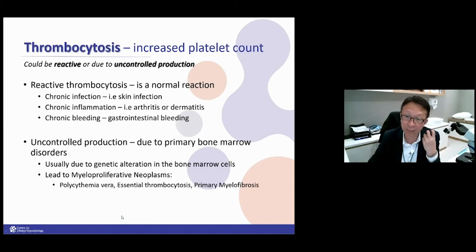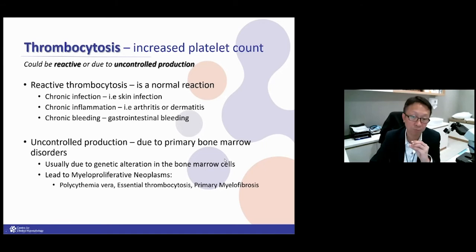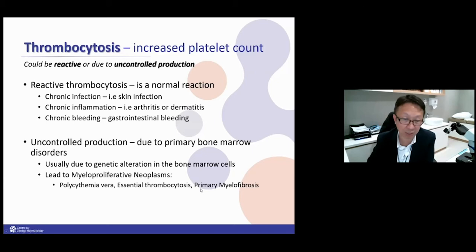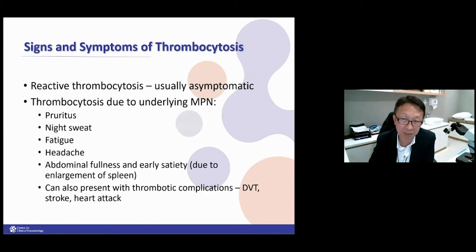The abnormal form is uncontrolled production due to a primary bone marrow problem — usually from genetic alterations leading to abnormal cell proliferation. These are named myeloproliferative neoplasms, or MPN, with subcategories including polycythemia vera, essential thrombocytosis, and primary myelofibrosis. These are precancerous — not exactly cancer — but some of these patients, many years down the road, can progress to leukemia.